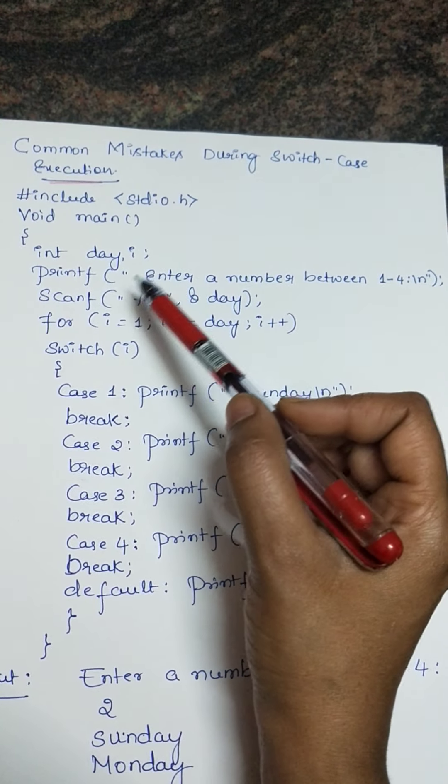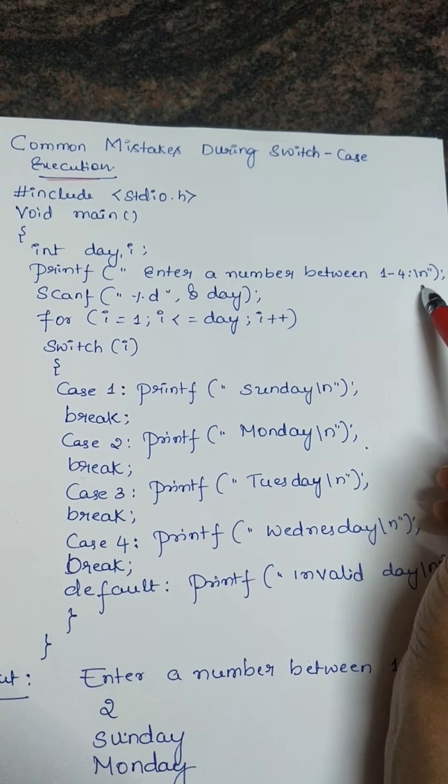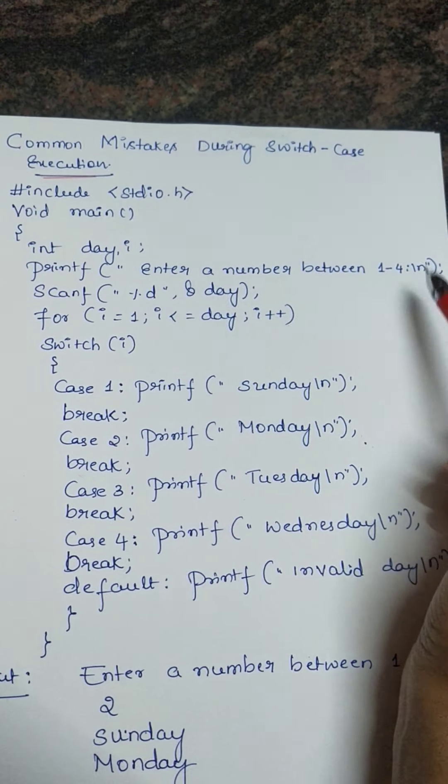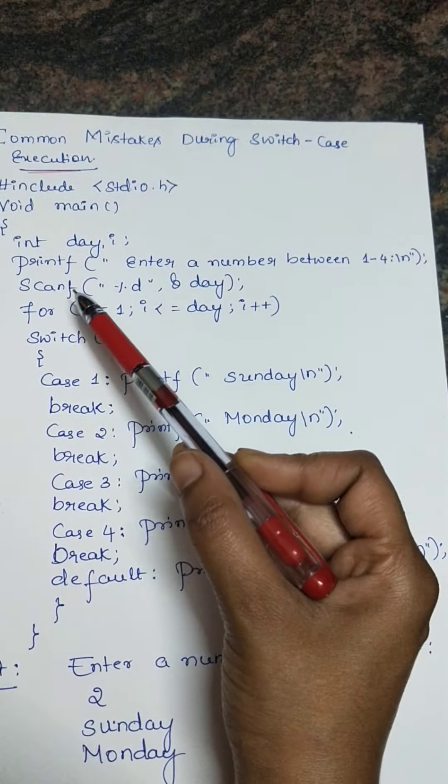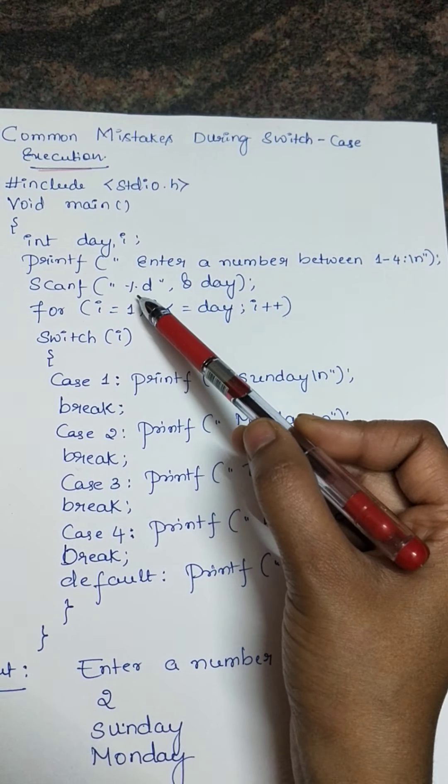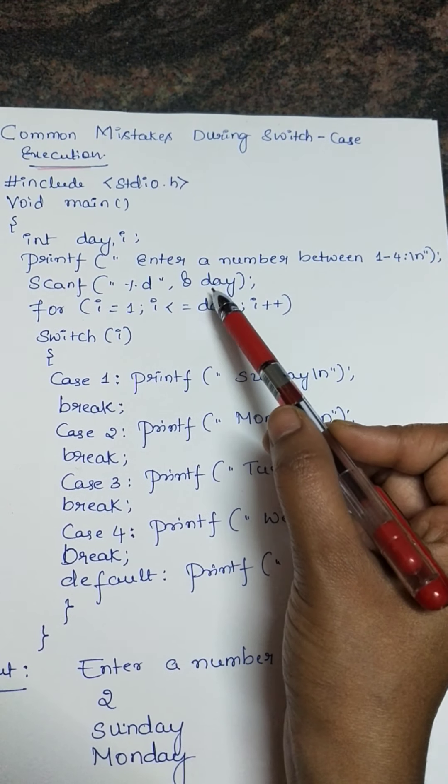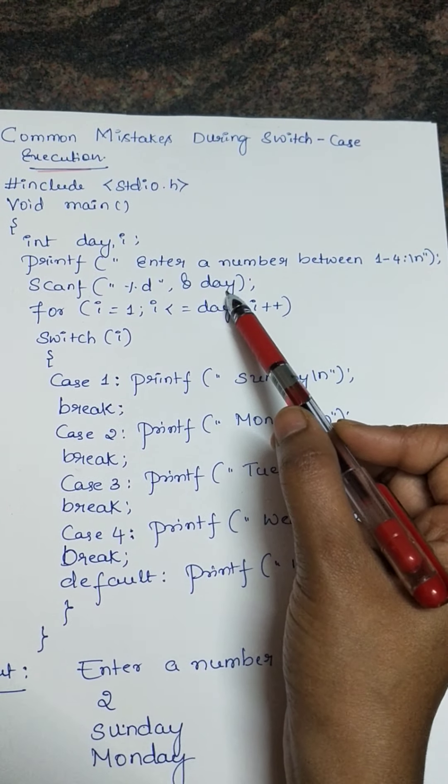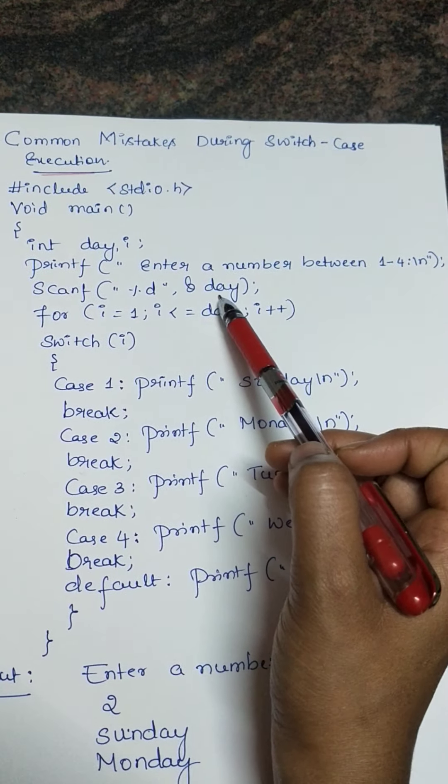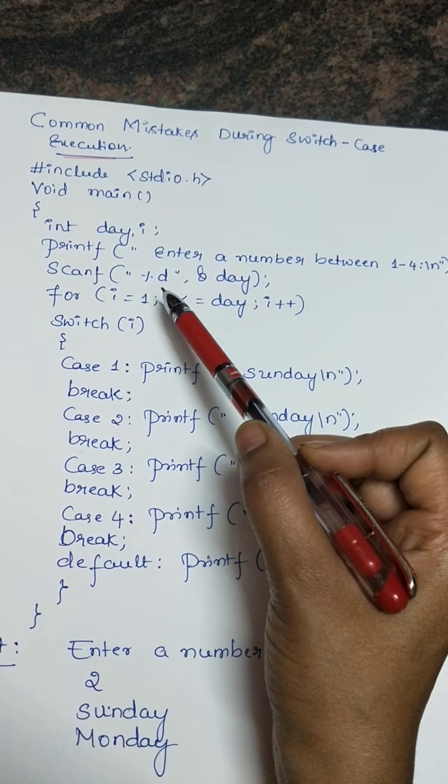Then I'm mentioning the two variables called day and i of type integer. Then printf enter the number between 1 to 4. I'm asking for entering a number between 1 and 4. So to accept the input I am writing the scanf statement. Through the scanf statement I am accepting the number between 1 to 4 and the variable called day is storing that value. Here I have declared it as integer. That's why percent d I have mentioned.